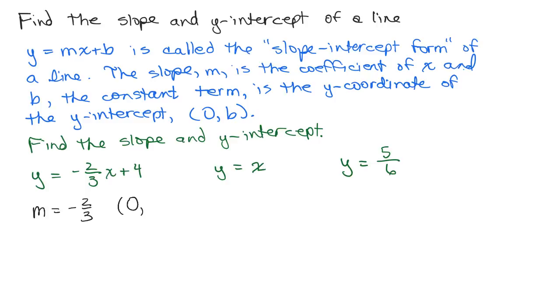This number 4 is the b, which will be the y-coordinate. And you can see when you put in 0 for x in this equation, you would just get y equals 4. So that's why that makes sense.